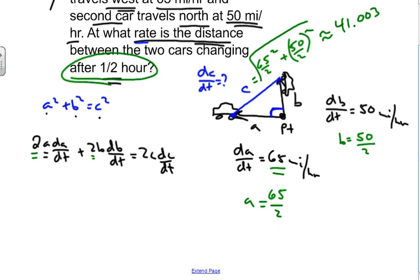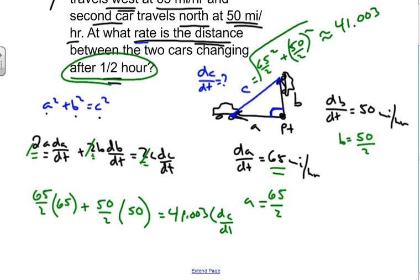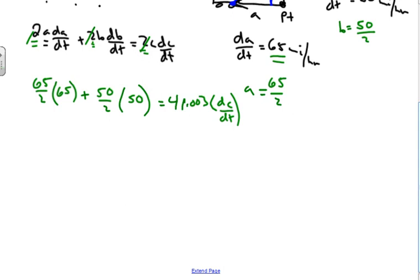Now when we do this, we can divide by 2 all these and cancel that out. So we're going to take our a value, which is 65 divided by 2, and multiply that by our dA/dt, which is 65. We're going to take our b value, which is 50 divided by 2, times 50 because that's dB/dt. And then we have c, which we know is 41.003, times dc/dt, which we are trying to find.